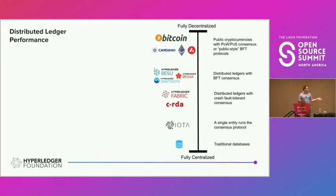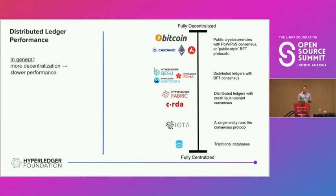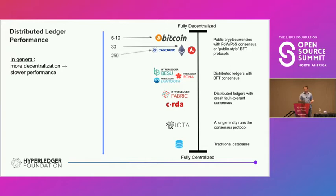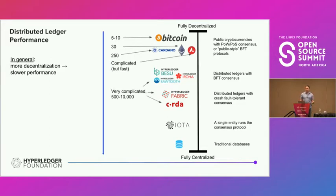In general, more decentralization leads to slower performance. Bitcoin is about 5 to 10 transactions per second. Ethereum is 30. Cardano is about 250. Assessing the performance of these blockchains is very dependent on the network, how you set it up, and how you configure it. Generally, the more centralized you are, the faster you go. Traditional databases can blow blockchains out of the water in terms of performance.